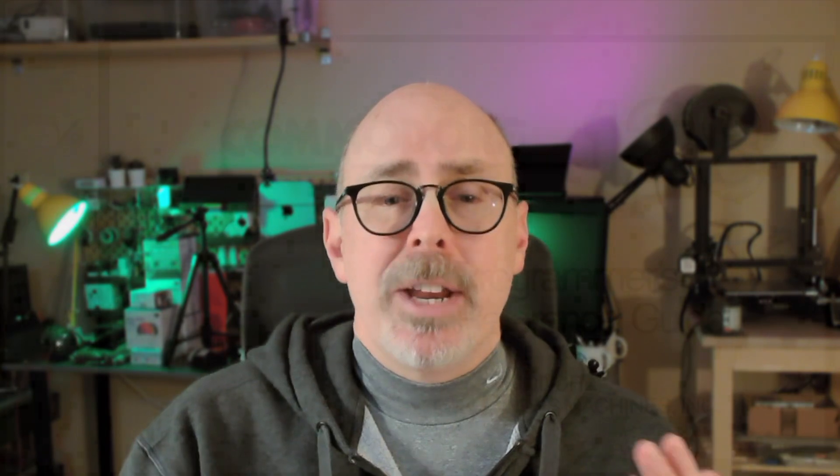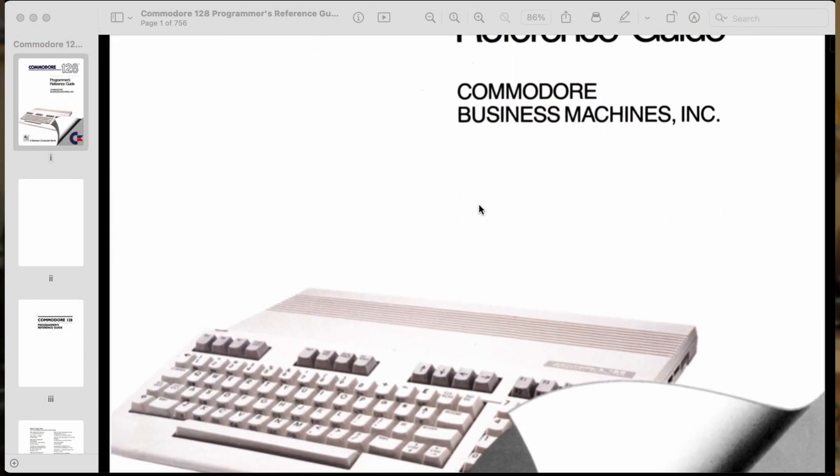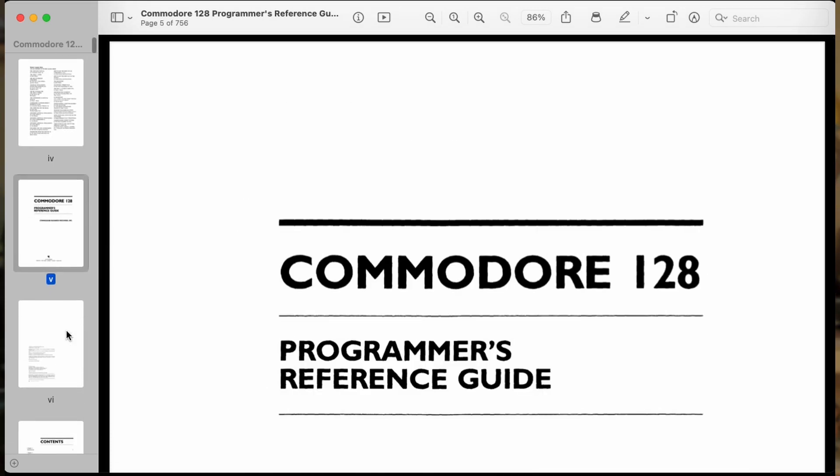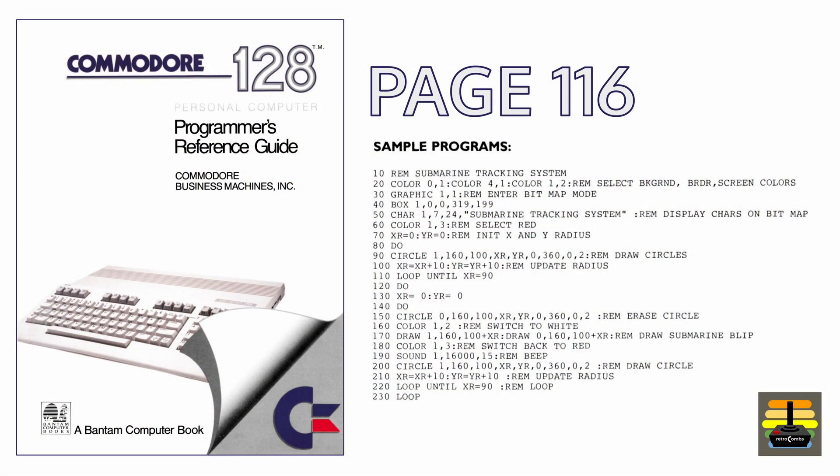In my previous video — converting a Commodore 128 submarine tracking system BASIC program to the Mega 65 — I show what the title suggests: converting a Commodore 128 BASIC version 7 program called the submarine tracking program, found on page 116 of the Commodore 128 Programmer's Reference Guide, to the Mega 65 version of BASIC, which began its life on an unreleased Commodore 65 with BASIC 10. This video is a follow-up to that project because there have been a lot of updates.